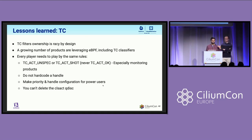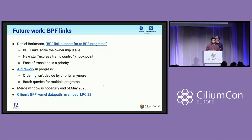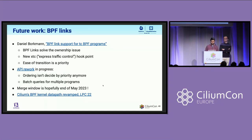Every player using TC eBPF needs to follow the same rules. Always use TC_ACT_UNSPEC or TC_ACT_SHOT, but never TC_ACT_OK, because if you use TC_ACT_OK the packet would be scheduled immediately to the network card — monitoring products especially should not do this. Do not ever hard-code a handle of one, because you don't know what other products are using. For power users, make sure priority and handle can be configurable so they can mix and match different components. Deleting the CLS Act QDISC is also very racy, so you cannot delete it in a safe way. The right way to fix it long-term is with BPF links — the kernel has had support for BPF links for a long time, but the traffic control subsystem does not yet have support for it. There's work happening upstream to add that support, expected to be merged around May 2023.